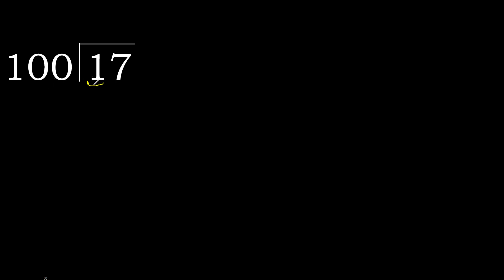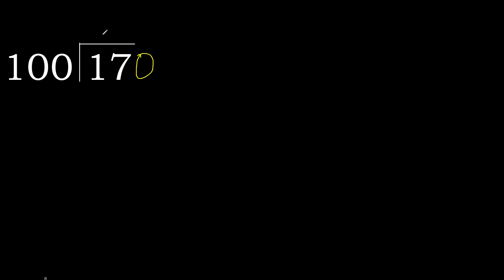17 divided by 100. 1 is less, therefore next. 17 is less, therefore next. There is no number, therefore complete — always complete with 0 here. 0 point, 0.